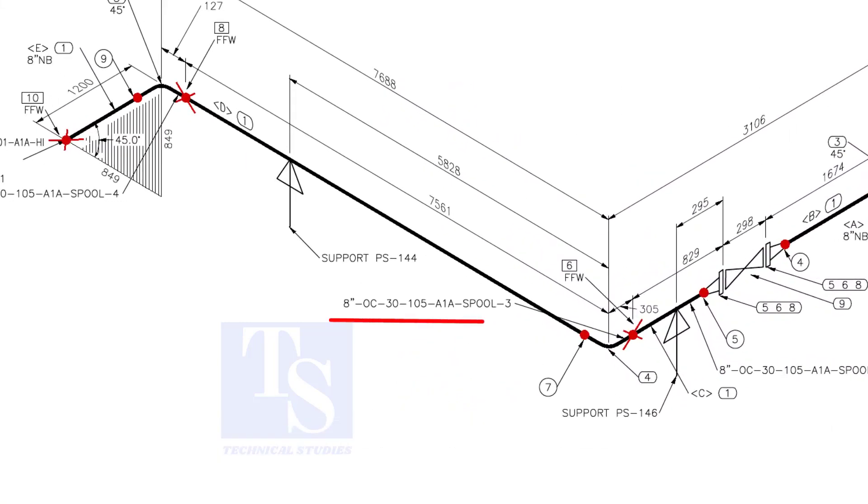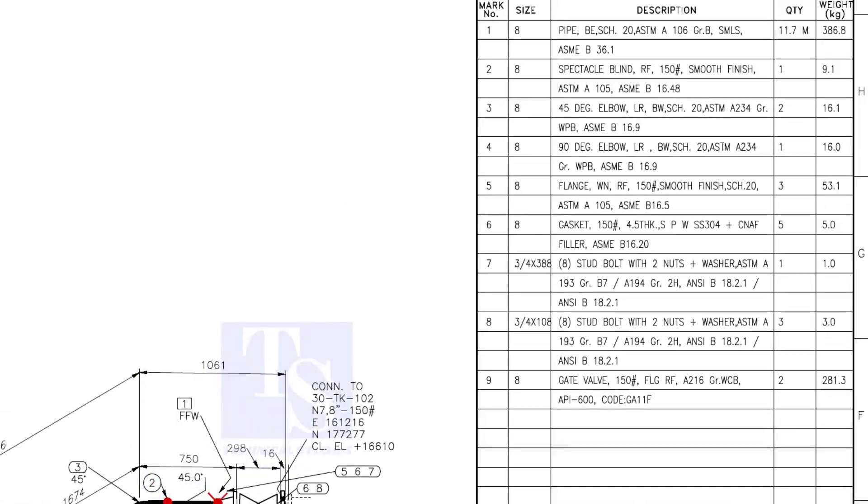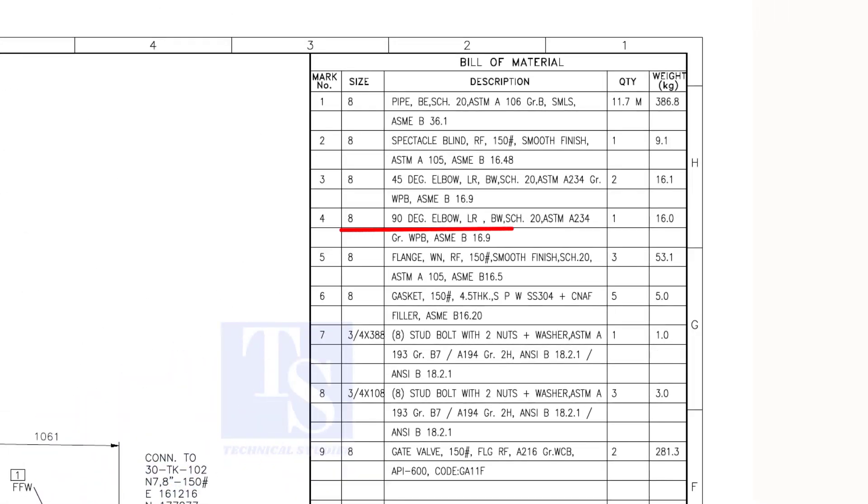Check the details of spool number 3. We know item number 1 is pipe. Check what is item number 4 in the material list. As per the list, item number 4 is a 90-degree long radius elbow. Let us fabricate this spool.